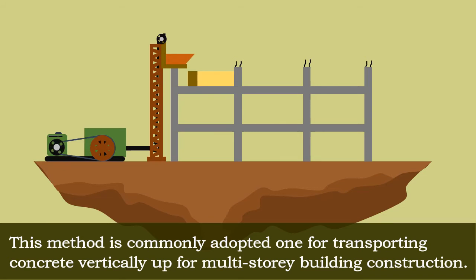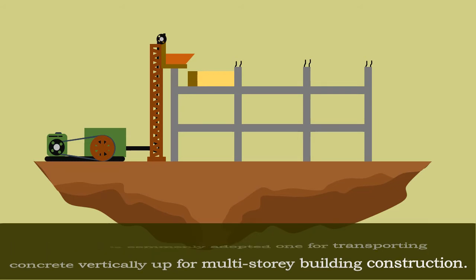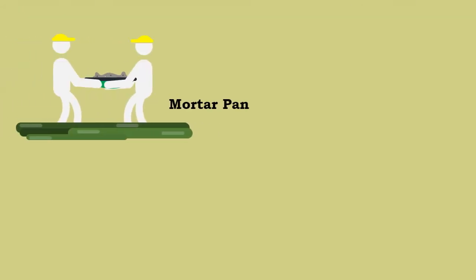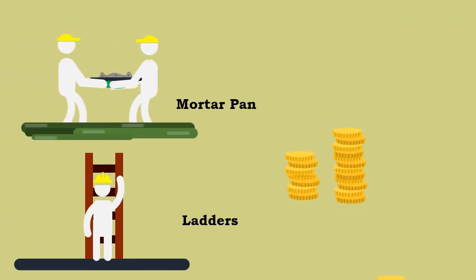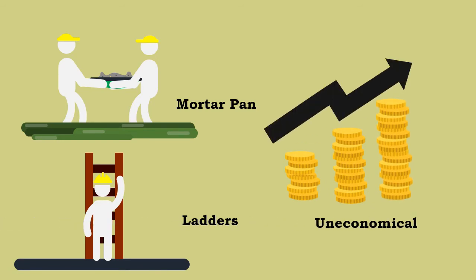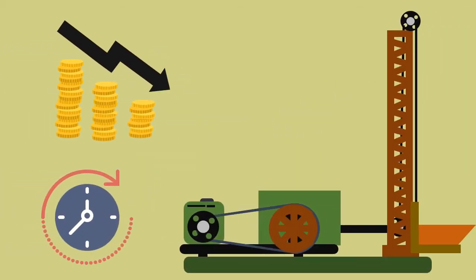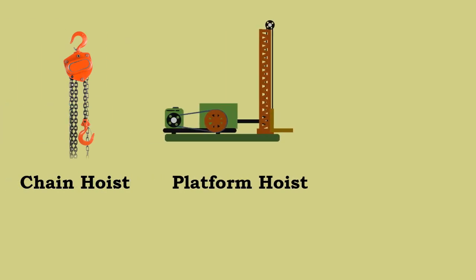The skip and hoist method is commonly adopted for transporting concrete vertically for multi-story building construction. Employing motor pan ladders for transporting concrete would be uneconomical for multi-story buildings. In this case, the skip and hoist method is more economical and faster. This method is adopted in three different ways: chain hoist, platform hoist, or skip hoist.